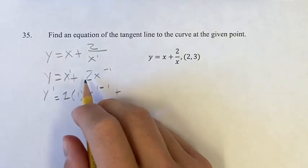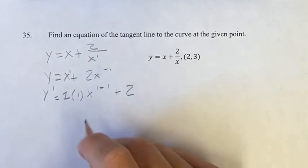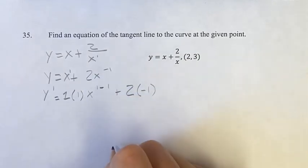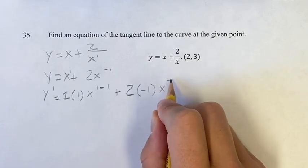Same thing with this next term, you take your coefficient, you write that out first, take the exponent, bring it down, new exponent is the old one, minus 1.